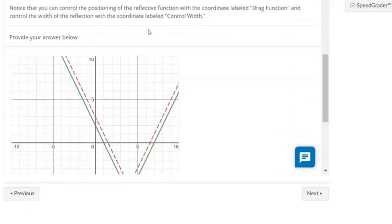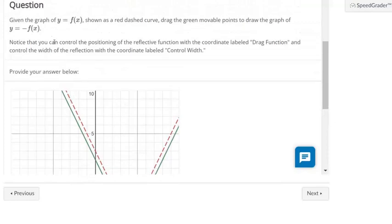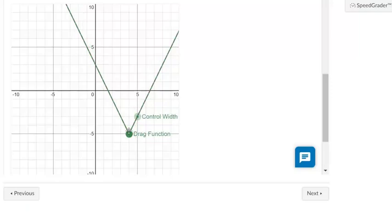Okay, the original graph is red, it's dotted. So we're supposed to do negative f of x. One good way of doing these is to pick a point.